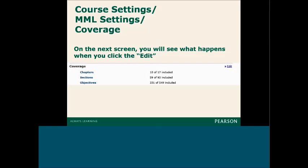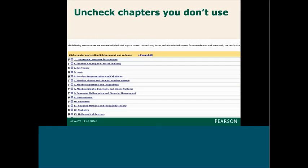At your course settings level, you can modify the coverage for your course. Here you see a screen where the textbook has 17 chapters, but only 10 were chosen because the other material isn't used in this course. That ensures students aren't directed to questions you don't cover in the study plan, and the correct mapping is in place. The flip side is you may want to include some chapters if they contain remedial material — for example, if you're teaching college algebra but have remedial chapters for basic algebra, you may want to include them so students have additional practice.